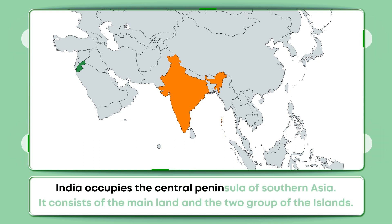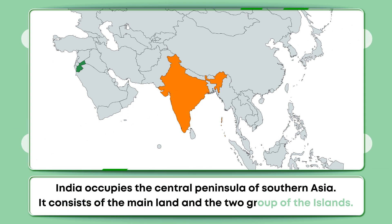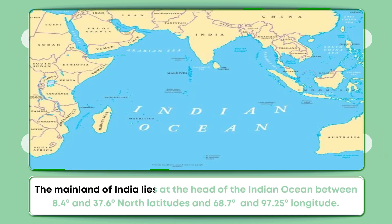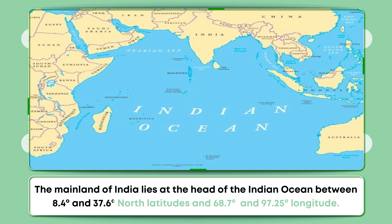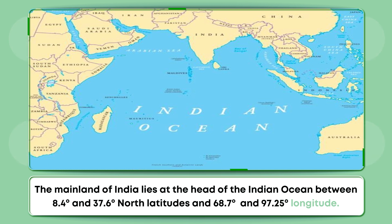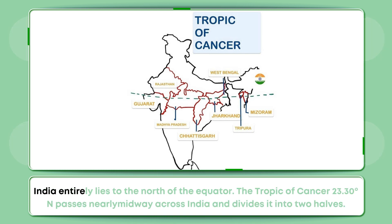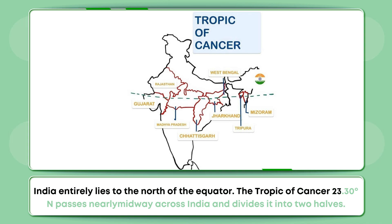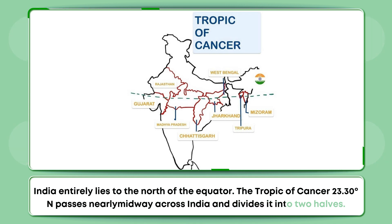India occupies the central peninsula of Southern Asia. It consists of the mainland and two groups of islands. The mainland of India lies at the head of the Indian Ocean between 8.4 degrees and 37.6 degrees north latitudes, and 68.7 degrees and 97.25 degrees longitude. India entirely lies to the north of the equator. The Tropic of Cancer, 23.30 degrees, passes nearly midway across India and divides it into two halves.